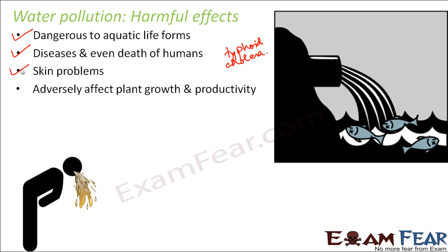Water pollution also adversely affects plant growth and productivity. We water plants every day so they remain alive and keep growing. But if that water contains poison, we are essentially giving poison to the plant. So the plant will not grow properly — it will have retarded growth, reduced productivity, and can even die. We think we are providing water to the plant, but we are actually providing poison.